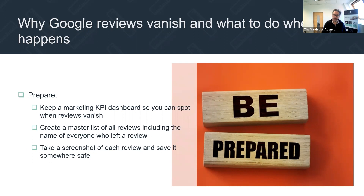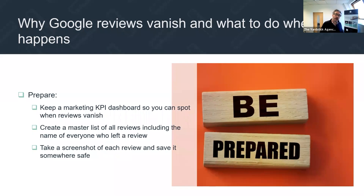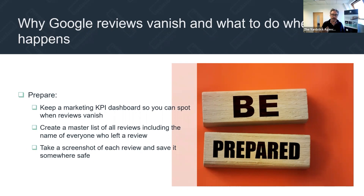Second: create a master list of all the reviews that you have. It's quite an easy job — someone can do it sitting in front of EastEnders at night. Create a spreadsheet: client name, date they left you the review, cut and paste of what they said. That means when a review disappears, you can quickly scroll down your Google reviews, scroll down the Excel spreadsheet, and work out which review has gone missing. If you don't have the spreadsheet, you're relying on your memory — and memory gets a bit fallible.